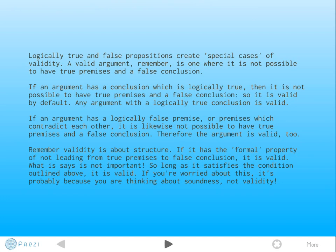Logically true and false propositions create these special cases of validity. It's interesting because it shows these quirks that happen when we formalize inference into a rigorous system. Remember that a valid argument is one where it's not possible to have true premises and a false conclusion. So if an argument has a conclusion which is logically true, then it's not possible to have true premises and a false conclusion because the conclusion can't be false. So it's kind of valid by default. Any argument with a logically true conclusion is valid.